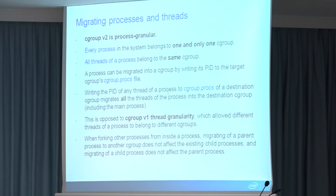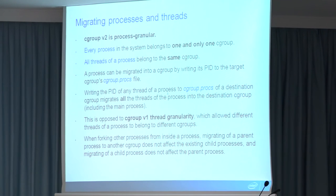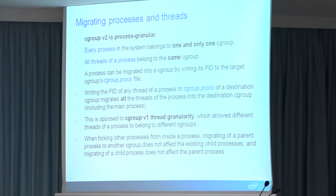Regarding processes: as opposed to Cgroup V1, Cgroup V2 is process-granular. With Cgroup V1, we could attach threads separately. In Cgroup V2, if you try to attach one thread of a group to a different Cgroup, all threads in that group — including the process itself — will be moved to the new group. I will talk shortly about why this is important for the network controllers.